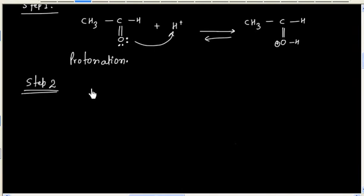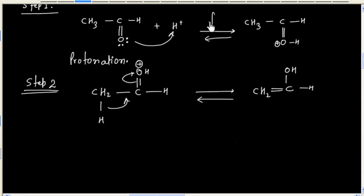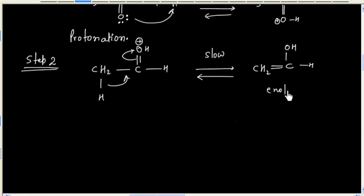In the next step we will have loss of a proton. So we will have the enol form, and this is again reversible. The protonation is the fastest step, but this loss of proton is the slow step. So this is the enol form. Once we have generated the enol, this double bond can act as a nucleophile.